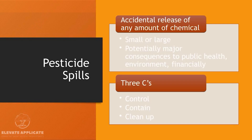A pesticide spill is an accidental release of any amount of chemical — small or large — and can have potentially major consequences to public health, the environment, and financially. Think of the train derailment in Ohio, where chemicals were burned and the impact on public health and the environment will take a long time to assess. That's a large example of what can happen. There are the three C's of a pesticide spill: control, contain, and clean up.